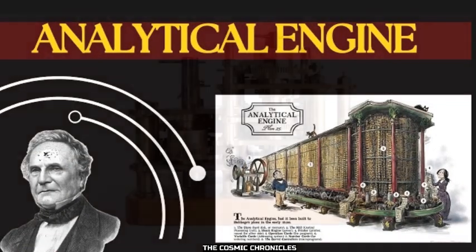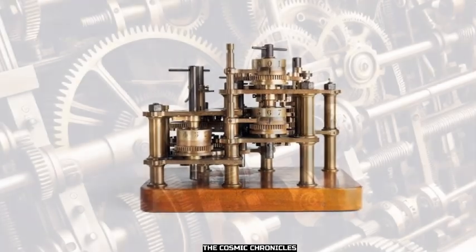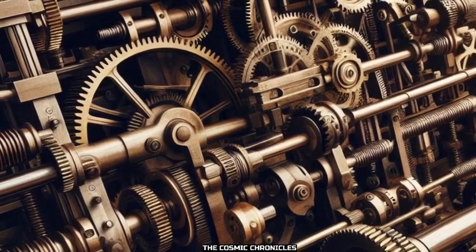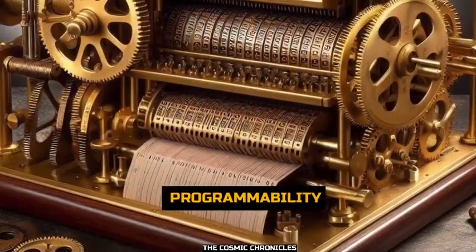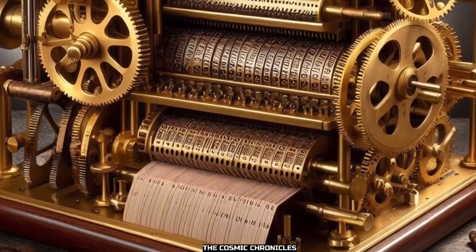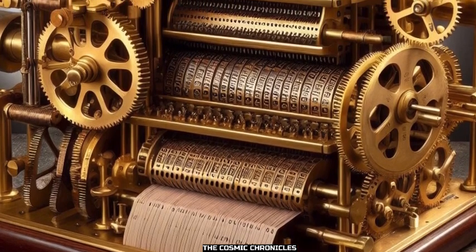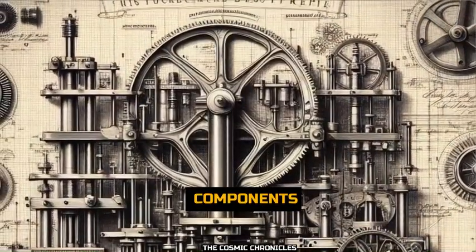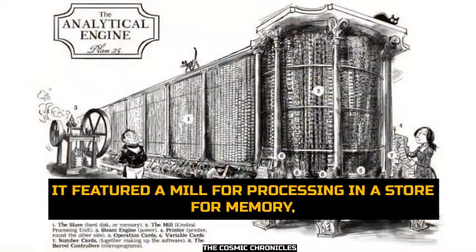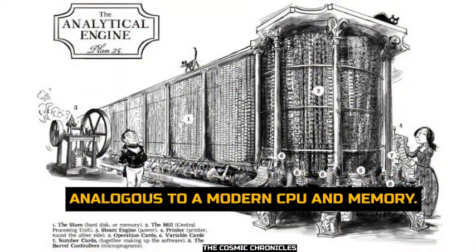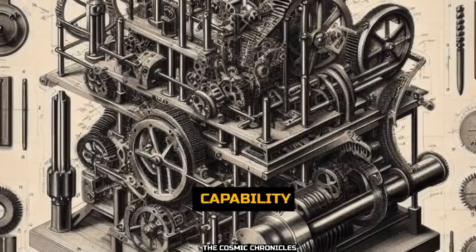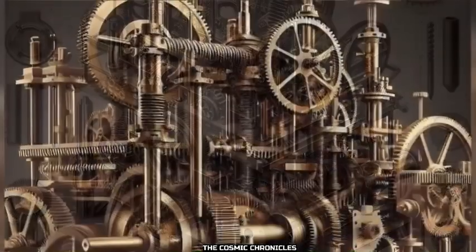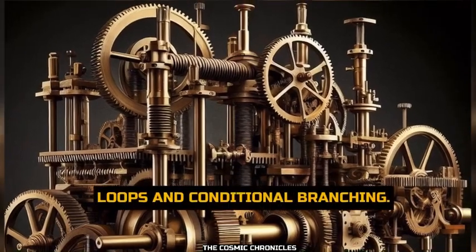Analytical Engine — General Purpose: unlike the Difference Engines, the Analytical Engine was intended to be a general-purpose computing device. Programmability: it could be programmed using punched cards, a concept borrowed from the Jacquard Loom. Components: it featured a Mill for processing and a Store for memory, analogous to a modern CPU and memory. Capability: it was designed to perform not just arithmetic but also more complex operations like loops and conditional branching.